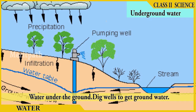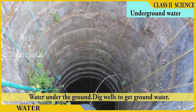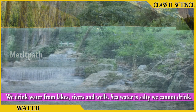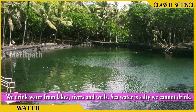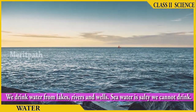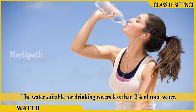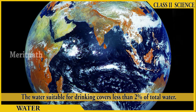Rivers flow into the sea, which is a huge body of water containing salty water. Water is also present underground, and we dig wells to get this underground water. Rivers, lakes, and ponds provide us drinking water as they have a low concentration of dissolved salts, whereas sea water is salty and not suitable for drinking. The water suitable for drinking covers less than two percent of the Earth's surface.